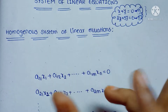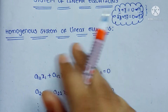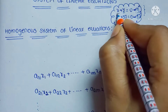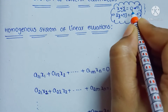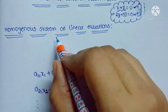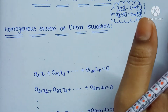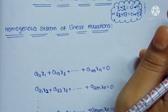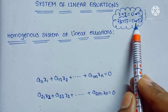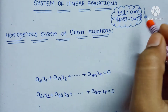There are two types of system of linear equations. One is homogeneous system of linear equations and another one is non-homogeneous. If some expression is equal to 0, it is a homogeneous system. If some expression is equal to any number other than zero, it is a non-homogeneous system of linear equations.